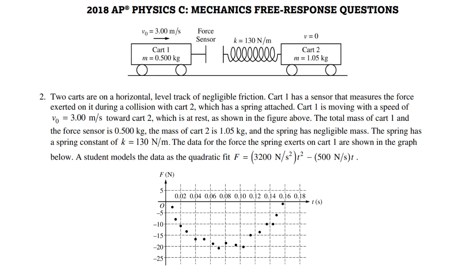This is a video of free response question number two from the 2018 AP Physics C Mechanics exam. Two carts are on a horizontal level track of negligible friction. Cart 1 has a sensor that measures the force exerted on it during a collision with cart 2, which has a spring attached. Cart 1 is moving with a speed of 3 meters per second toward cart 2, which is at rest. The total mass of cart 1 and the force sensor is half a kilogram. The mass of cart 2 is 1.05 kilograms, and the spring has negligible mass. The spring has a spring constant of 130 newtons per meter.